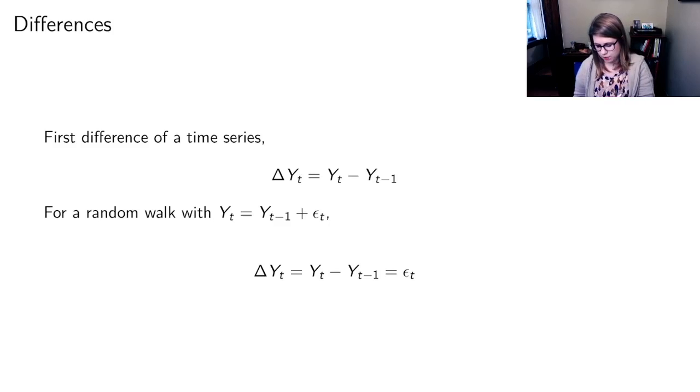If we had a random walk where yt is the previous time plus a random error, then the ΔYt is yt minus the previous time which is just equal to that random error. So if you have a random walk then when you look at the differences it should just look like random noise.